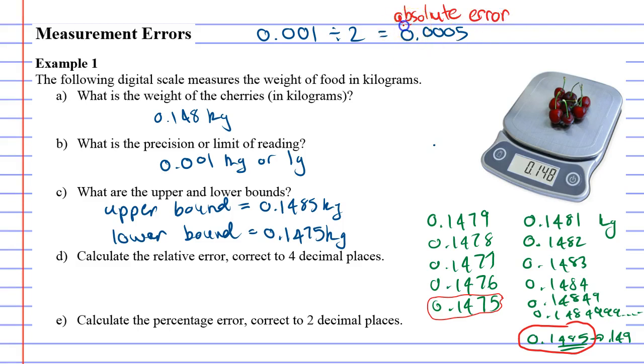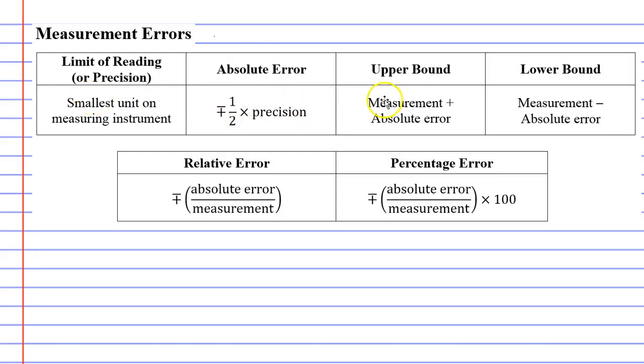Now this number, the absolute error, is useful when you want to find the upper and lower bounds. Because if I've taken my weight, actually I'll do this in red. If I've taken my weight of 0.148 and added my absolute error of 0.0005, it would give me my upper bound. And if I've taken my measurement of 0.148 and subtracted 0.0005, it would have found my lower bound. And this is something we notice here in the formulas it talks about. The upper bound is the measurement plus the absolute error. And the lower bound is the measurement minus the absolute error.